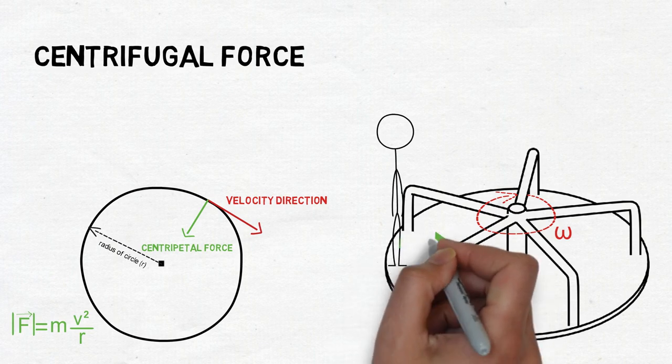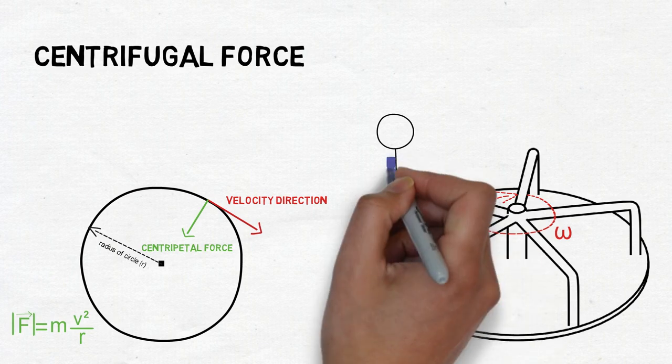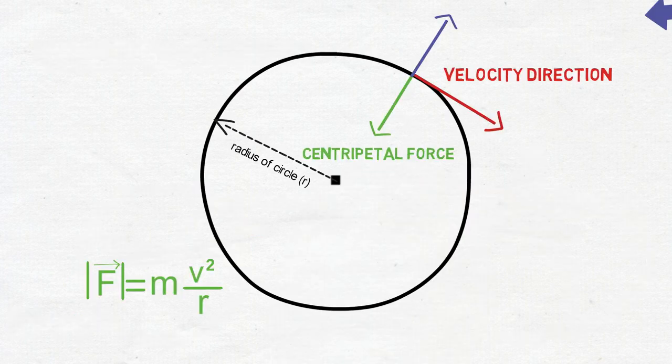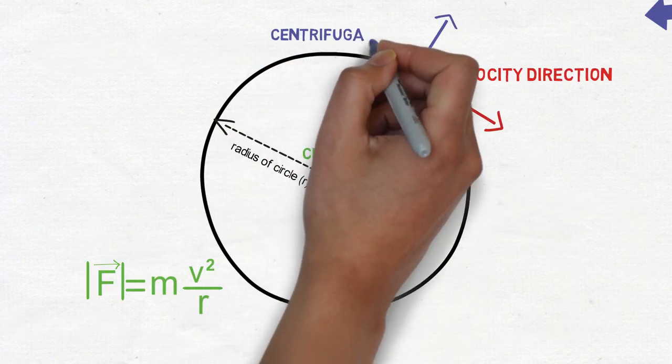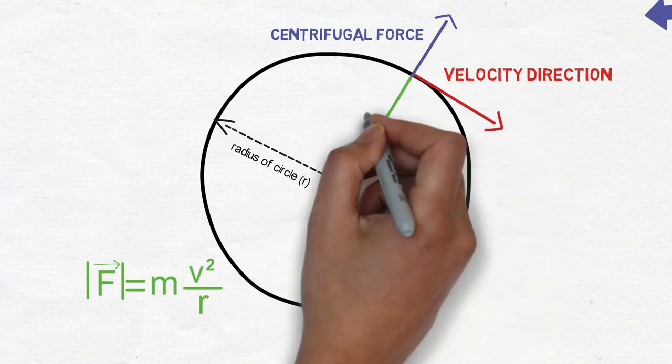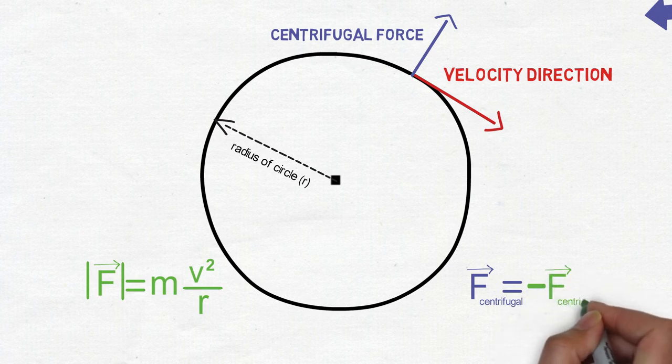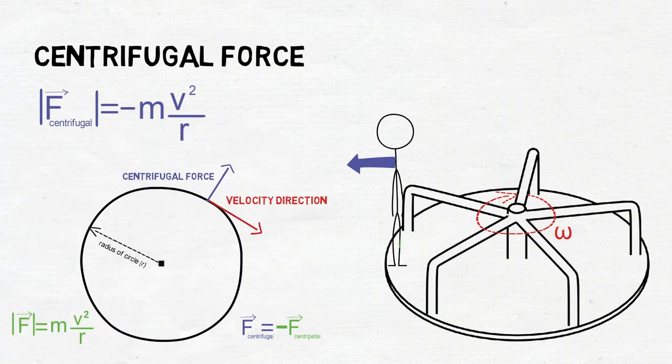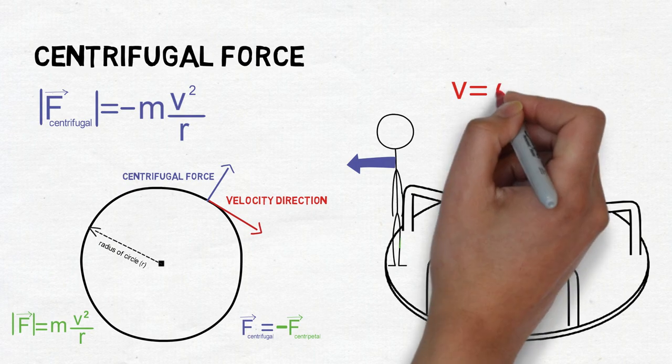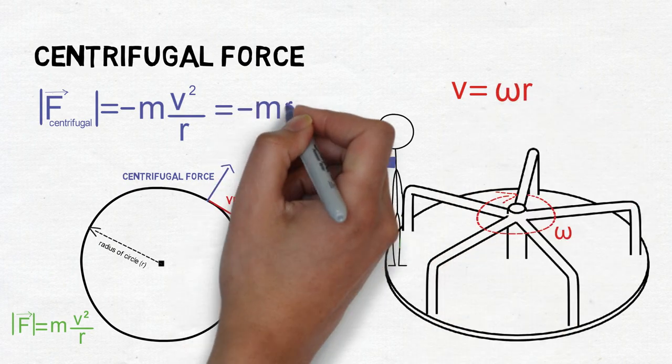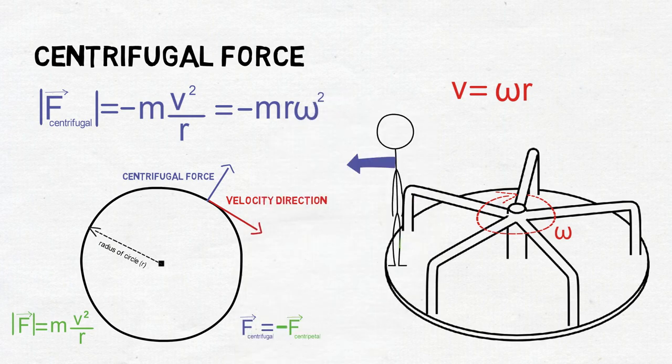Now from Mario's point of view of the rotating non-inertial frame he feels an apparent force pushing him outwards. This is called the centrifugal force and will be equal in modulus and opposite in direction with respect to the centripetal force. We also know that the velocity v is equal to the angular velocity omega multiplied by the radius. So we can rewrite the centrifugal force as m r omega squared.